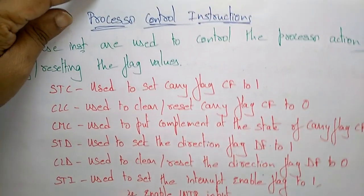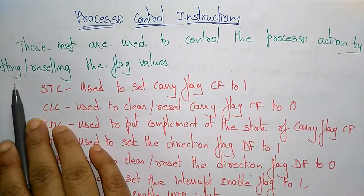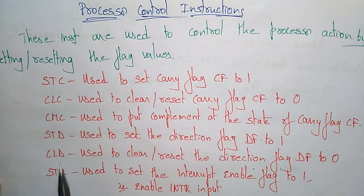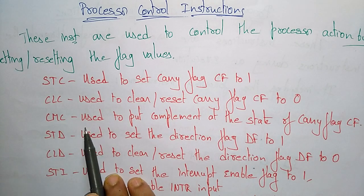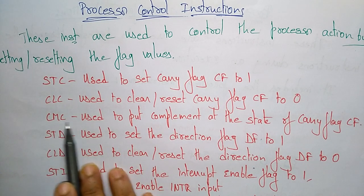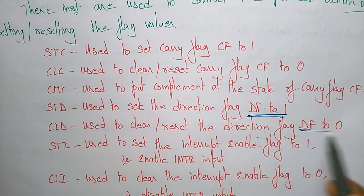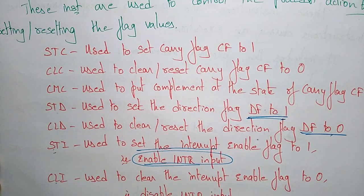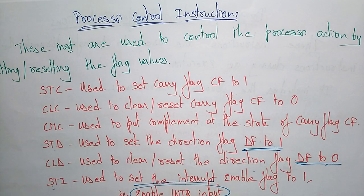The sixth type is the processor control instruction. These instructions control the processor by setting or resetting flag values. Instructions include: STC (set carry flag), CLC (clear carry flag), CMC (complement carry flag), STD (set direction flag), CLD (clear direction flag), STI (set interrupt flag — enabling interrupt input), and CLI (clear interrupt flag — disabling interrupt input).